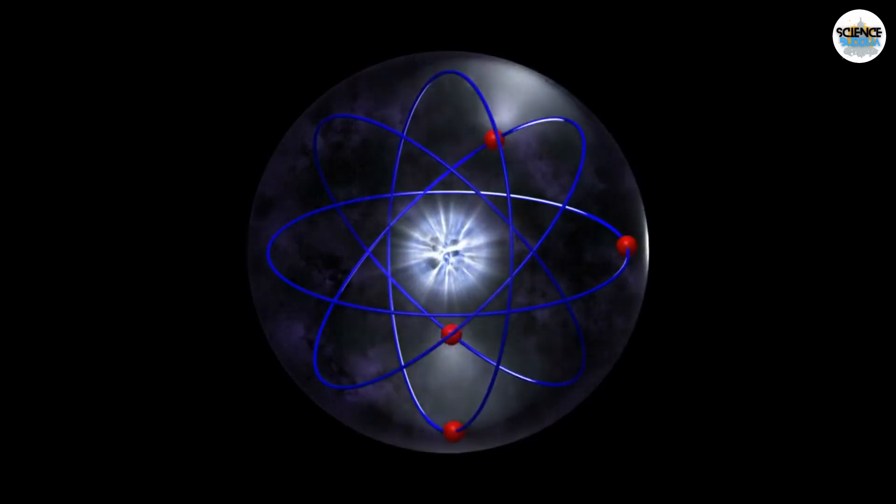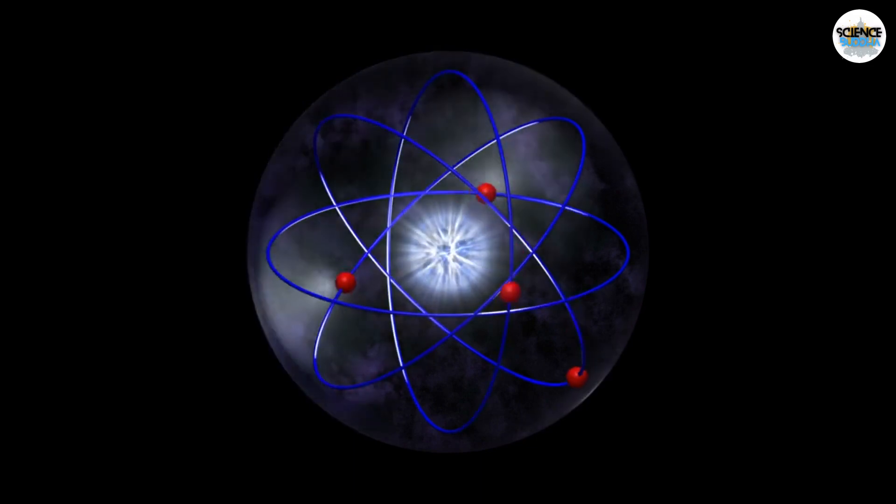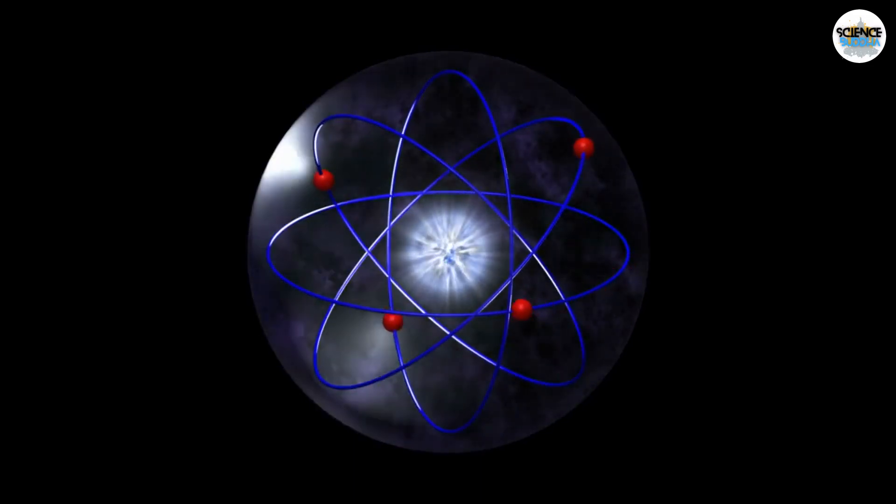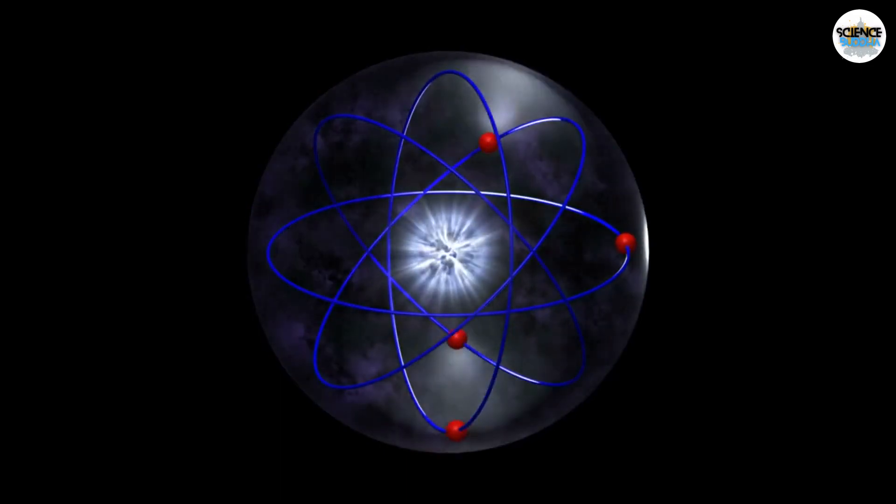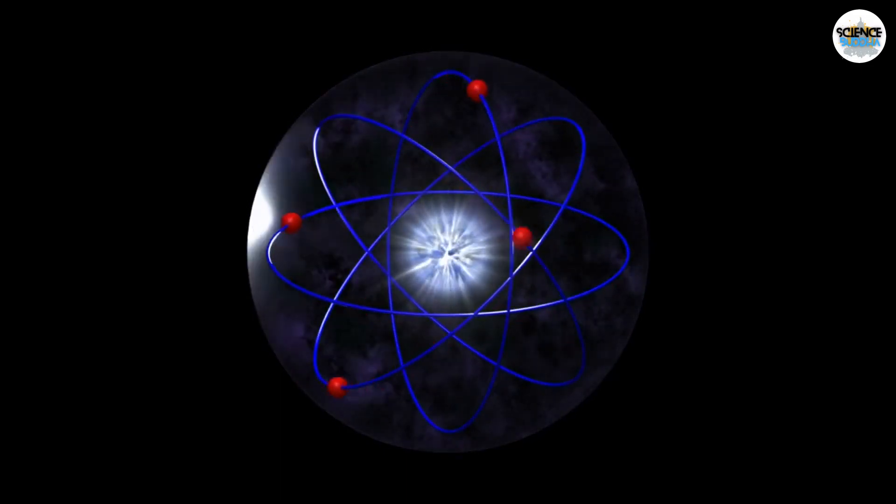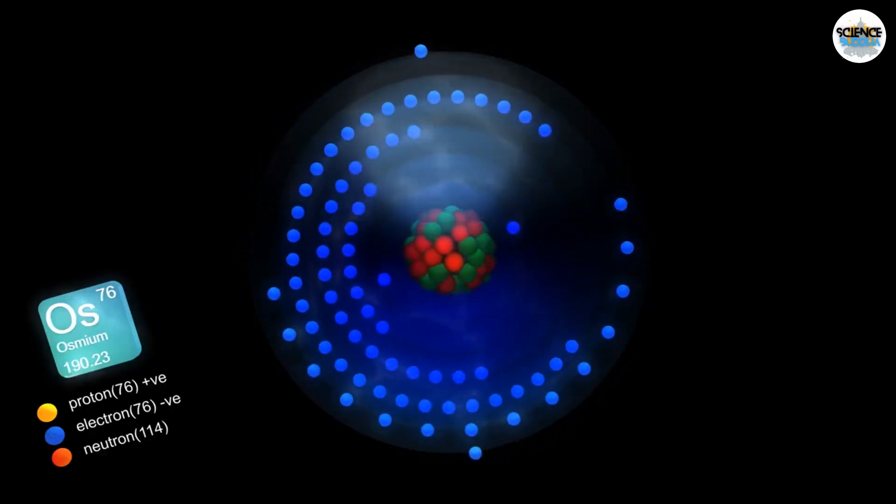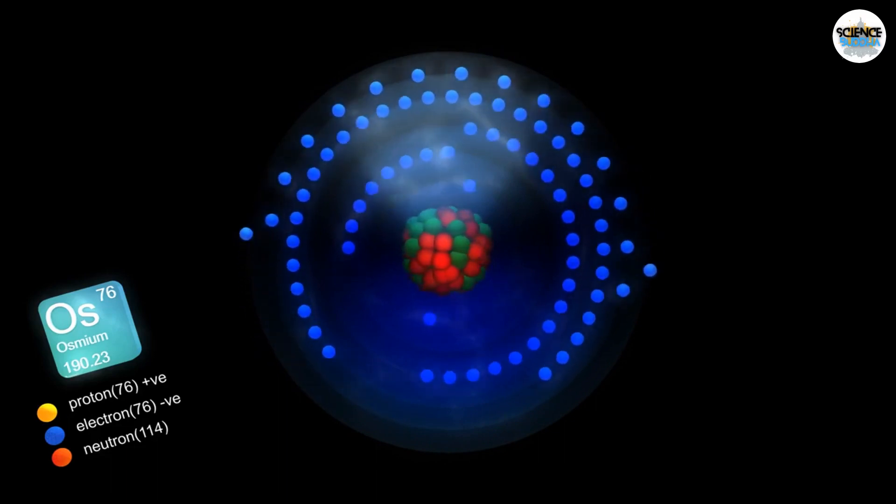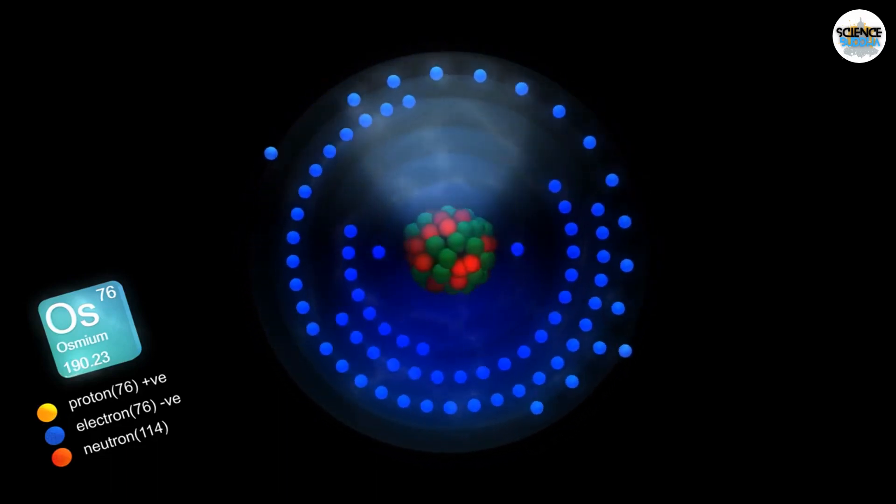On Earth, around 90 natural elements exist, leftovers from cosmic processes. An element is basically an atom with a nucleus made of protons and possibly neutrons. Electrons orbit this nucleus, equal in number to protons. Elements have unique traits like hardness, color, melting points, and more. The key defining factor is the number of protons.